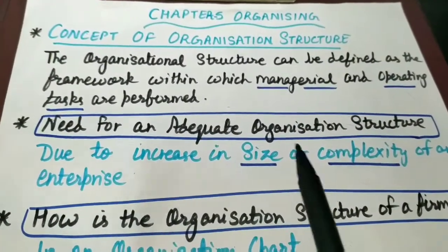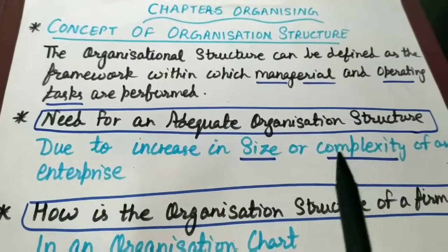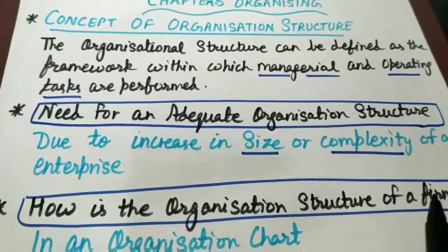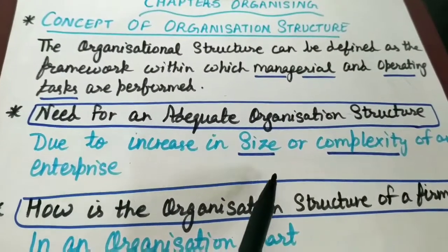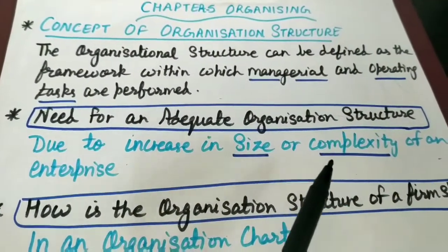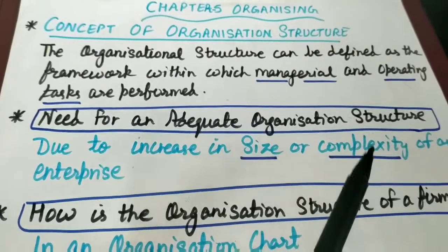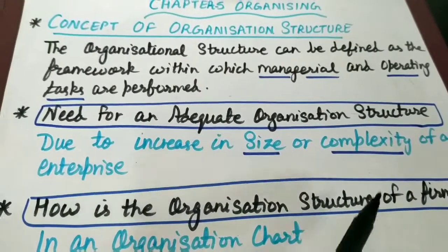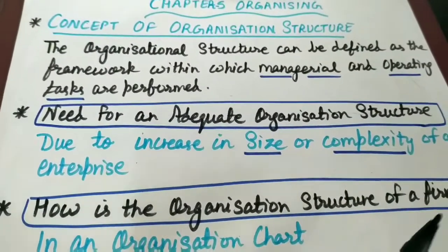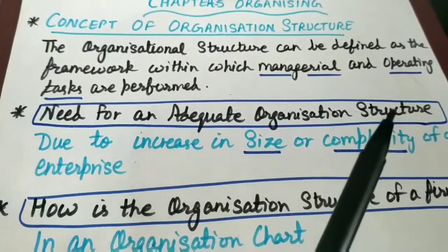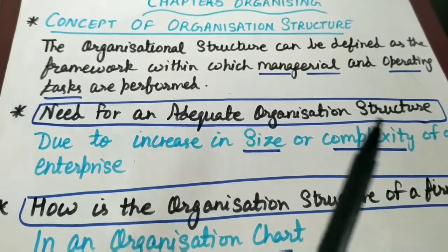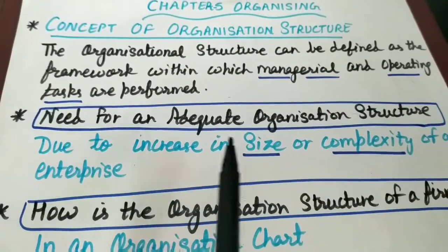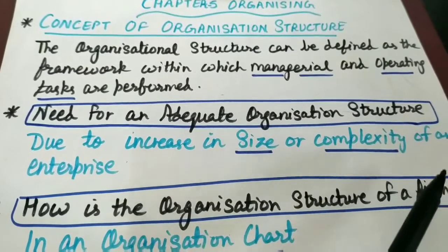What is the need for an adequate organizational structure? Kya zaroorat hai ki humari organization mein hum organizational structure ko create karein? The reason is, jab humari organization ka size increase hota hai ya complexity ki taraf barhne lagti hai, at that time organization ke liye problems create ho jaate hain, because they add number of products in their manufacturing process, unke functions increase ho jaate hain. Toh at that time it becomes difficult for the organization to coordinate the activities of their enterprise. Isliye zaroori hai ki ek adequate organization structure hona chahiye har ek enterprise ka.